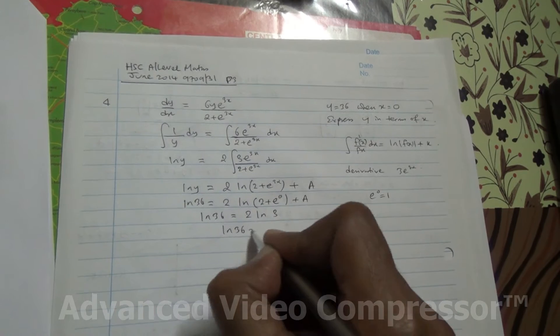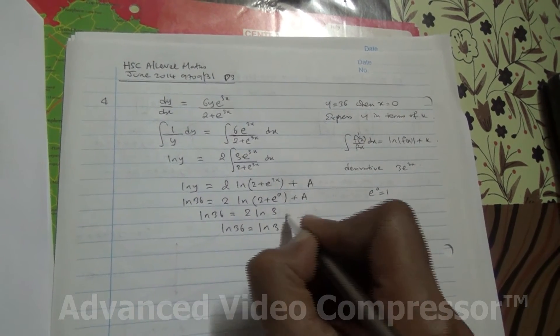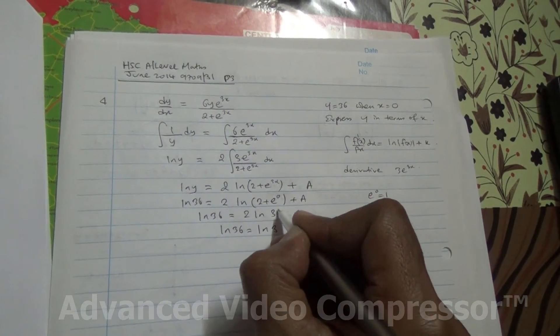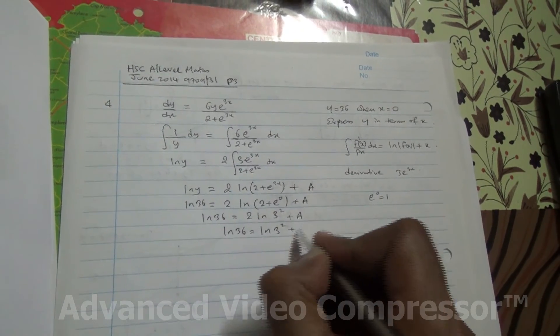Therefore, ln 36 is going to be ln 3 plus a, ln 3 to the square, plus a.